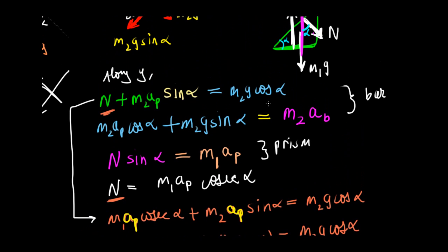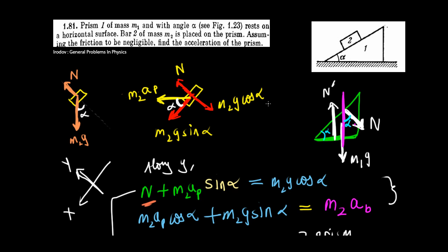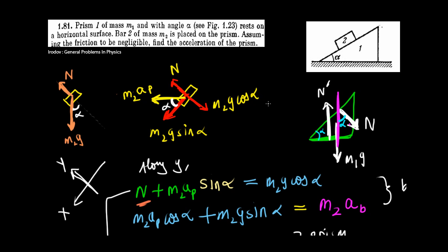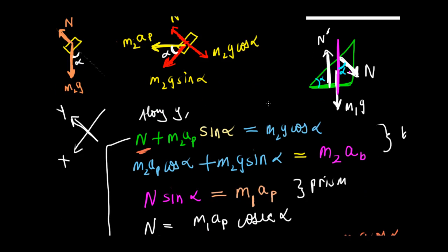That was pretty long. This required the knowledge of pseudoforces. You could have done it without that, but it is very helpful to know that concept because it's the thing we experience in our daily lives — we experience that sudden jerk. If the train moves in that direction suddenly, you yourself feel the force in the backward direction. That's why I took the pseudoforce to be in the opposite direction to the acceleration of the prism. Acceleration of the prism is to the right, but the pseudoforce on the bar is towards the left.